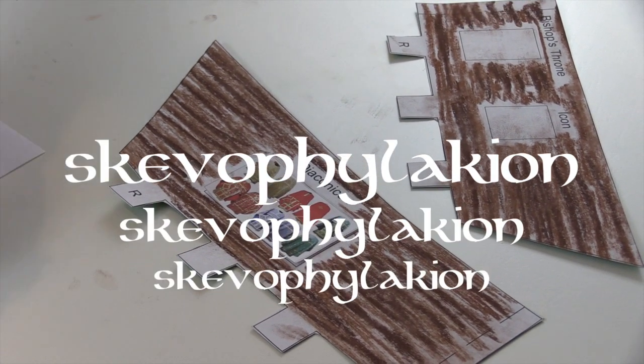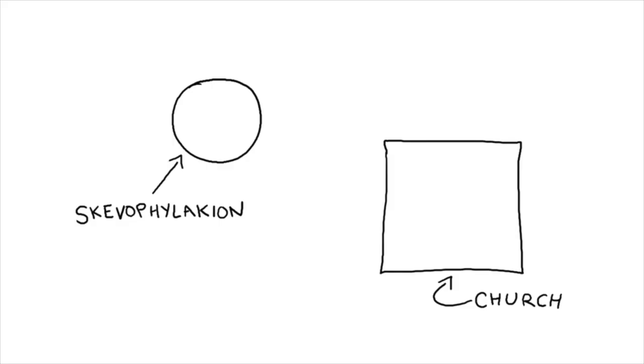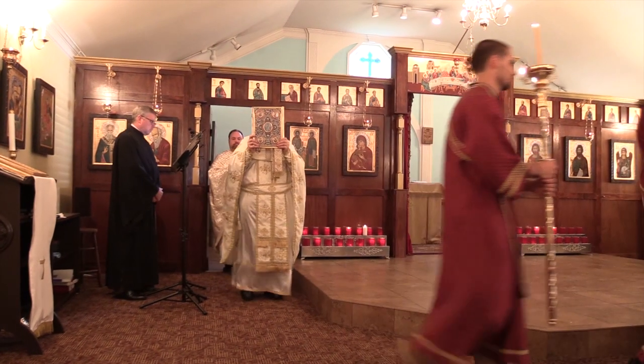Skebophilakian, Skebophilakian, Skebophilakian. During the Divine Liturgy, a procession from the Skebophilakian carried the gospel book into the church and then to the Bema. Today we call this the Small Entrance.